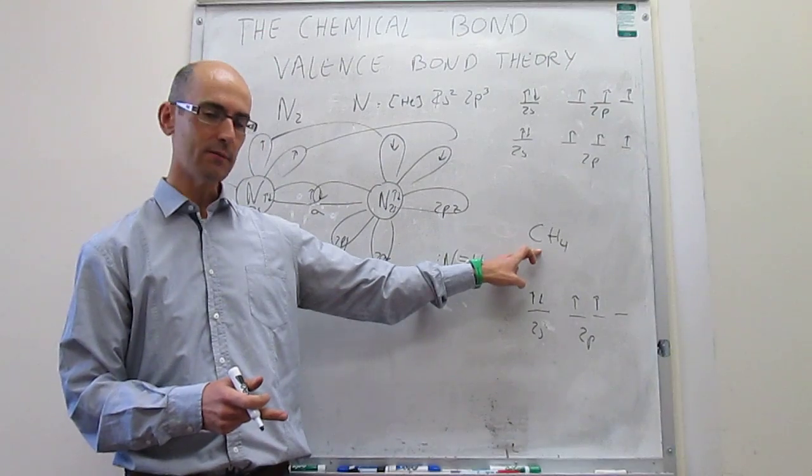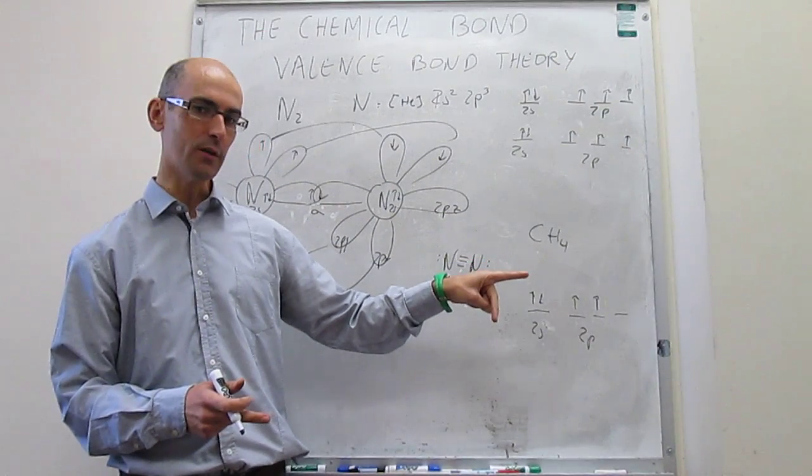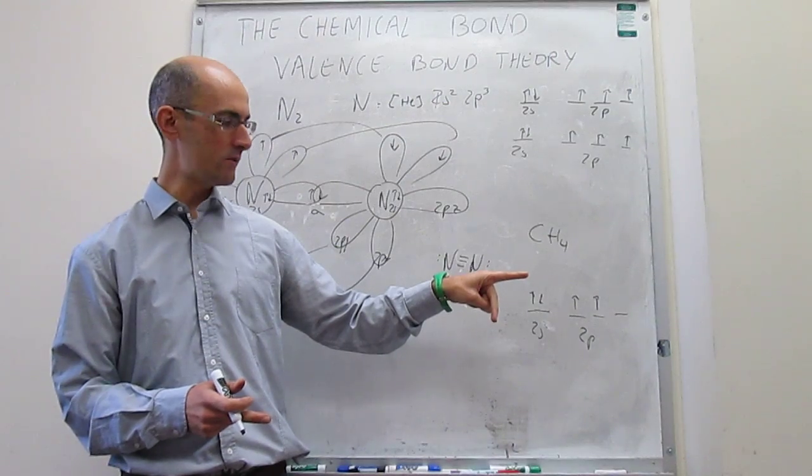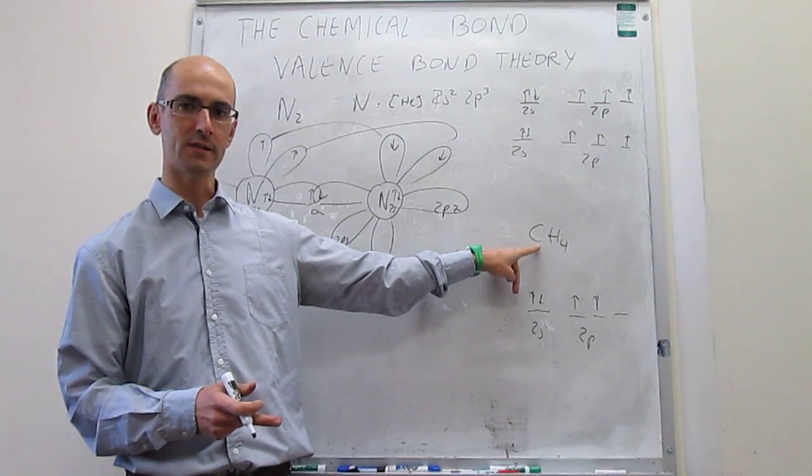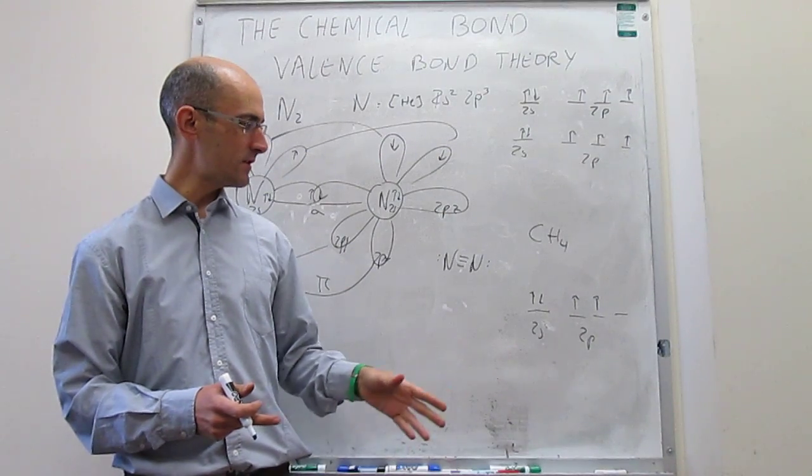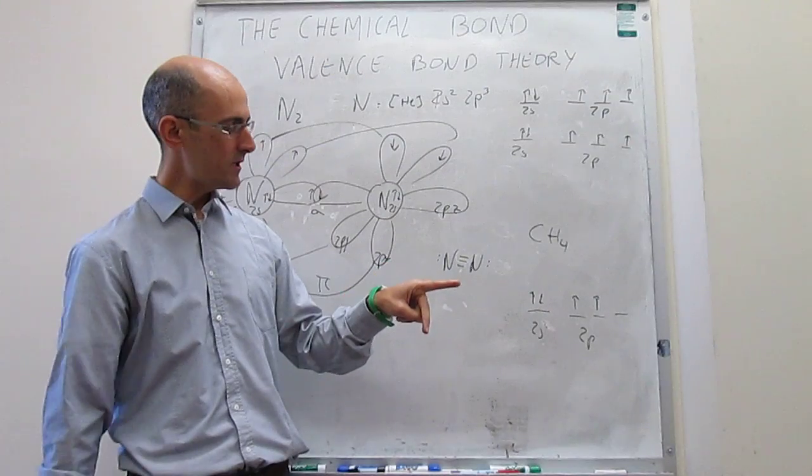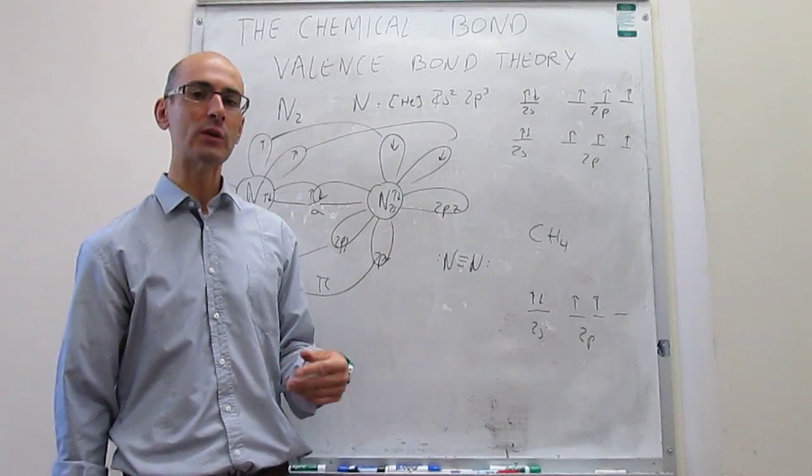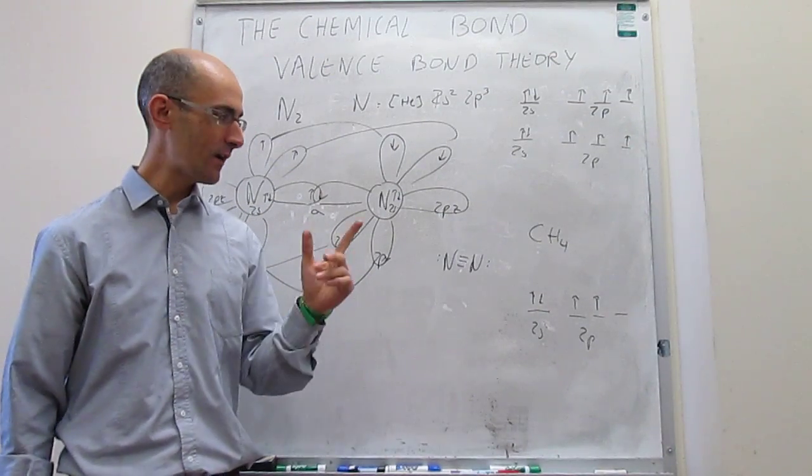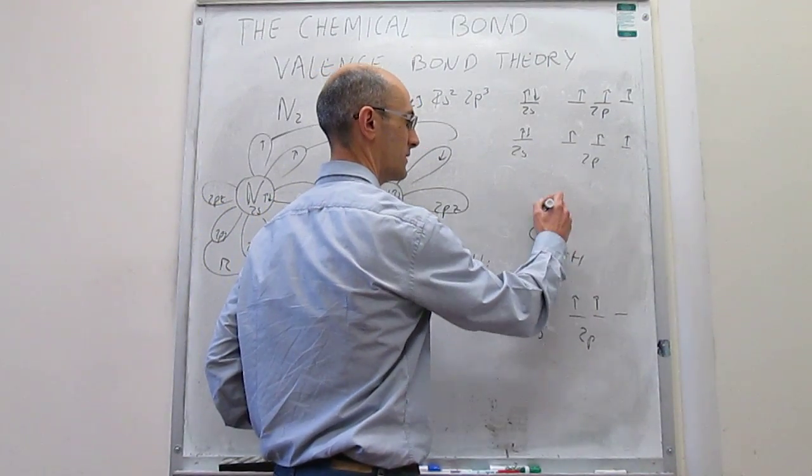But for example, when you think about the methane molecule, you actually don't have only two bonds that are 90 degrees from each other. You actually have four bonds, not two, four, and the geometry is very different. Again, you expect those bonds to be 90 degrees from each other, but it turns out that the methane is a tetrahedral molecule, and the angle between those bonds actually happens to be 109 degrees.